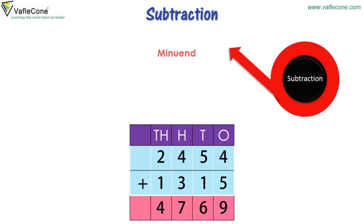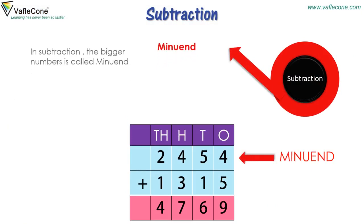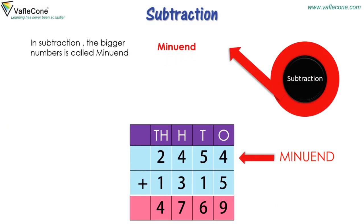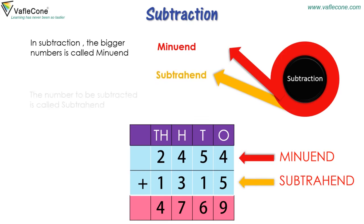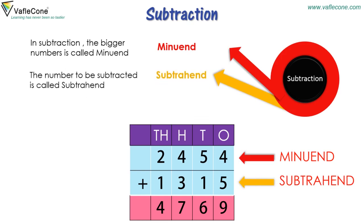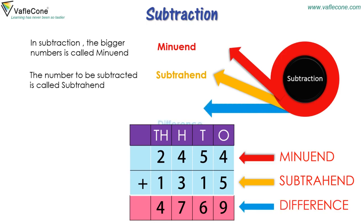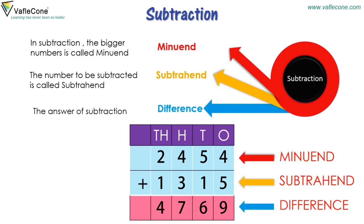In subtraction, the bigger number is called the minuend. The number to be subtracted is called the subtrahend. The answer of subtraction is called the difference.